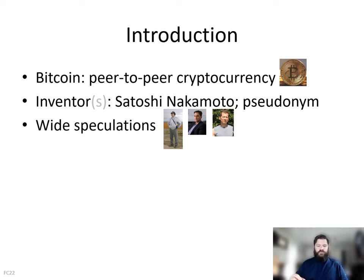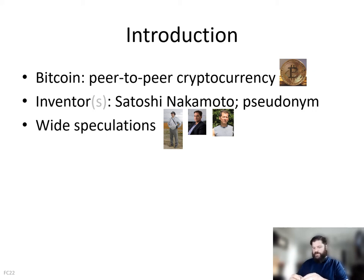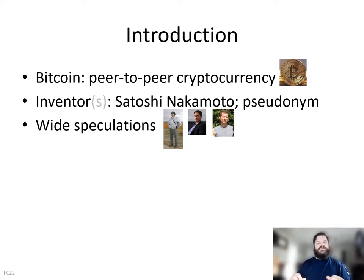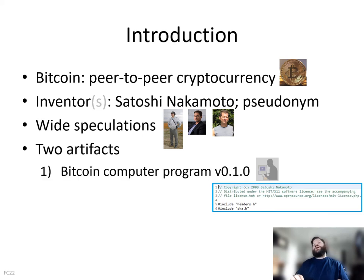During the study we identified two specific Bitcoin artifacts: specifically the source code for version 0.1.0, released in early 2009, and the second was the Bitcoin white paper. Both artifacts are very formal and structured. We did not include any of the emails or posts or anything like that, as they're unstructured and not necessarily the same as these types of artifacts that we used.